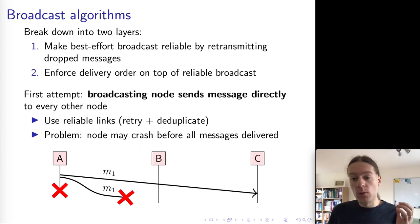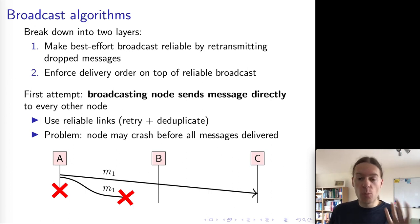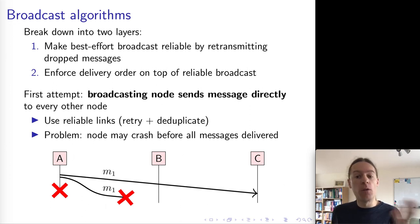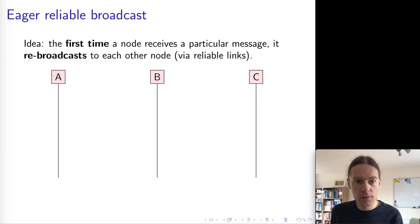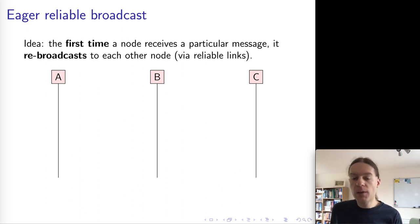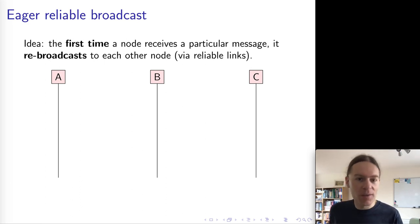So we have to design an algorithm which is robust so that even if the sender of a message crashes, all of the remaining nodes will still agree on which message was actually delivered. One technique we can use is called Eager Reliable Broadcast, and that relies on essentially just everybody sending messages everywhere.